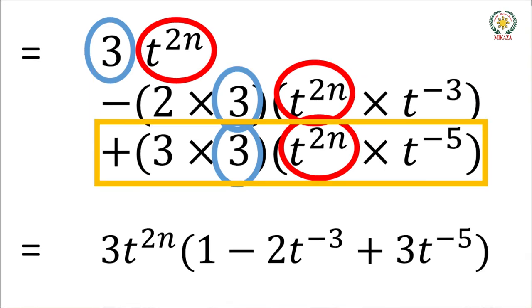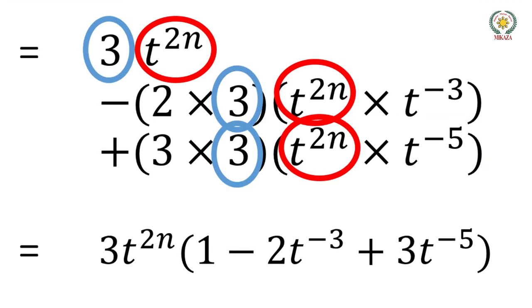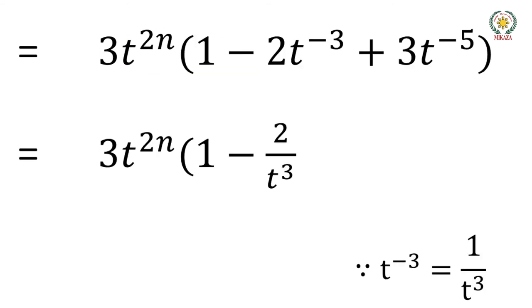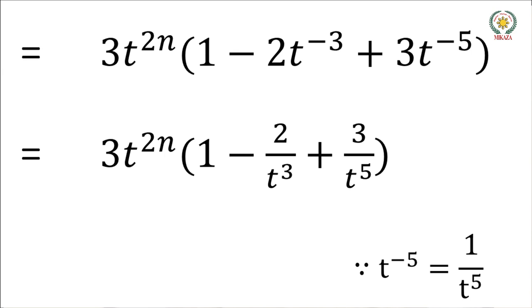This gives us 3t to the power 2n times (1 minus 2 over t to the power 3 plus 3 over t to the power 5). This is our answer.